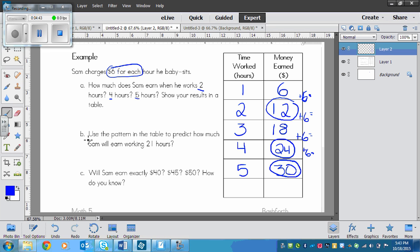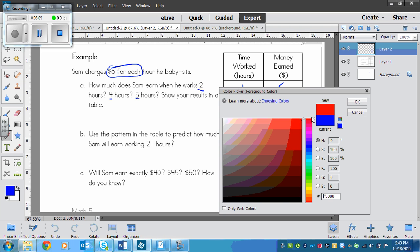Next one says use the pattern in the table to predict how much Sam will earn working 21 hours. So 21 would go here and we need to figure this out. We could extend the table 6, 7, 8, 9, 10, 11 and continuing on, but we also know that this number times 6 will equal the number that we want.